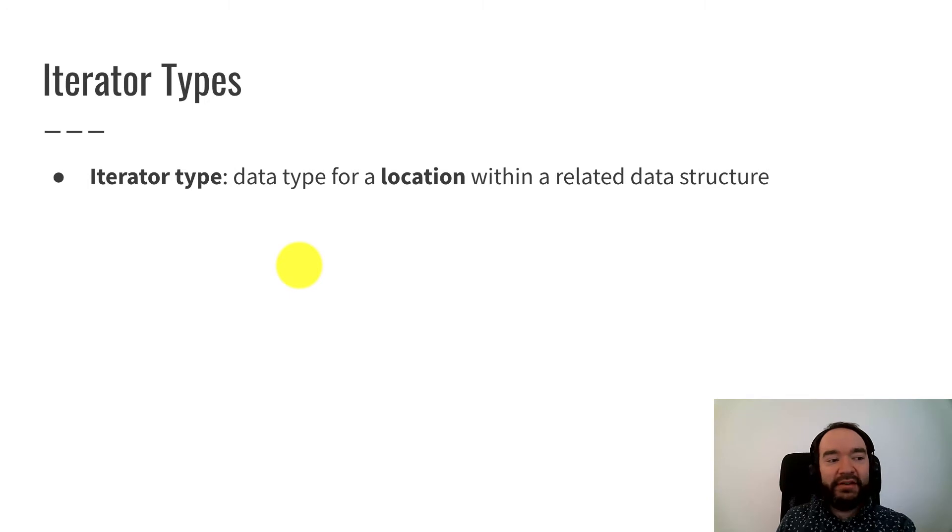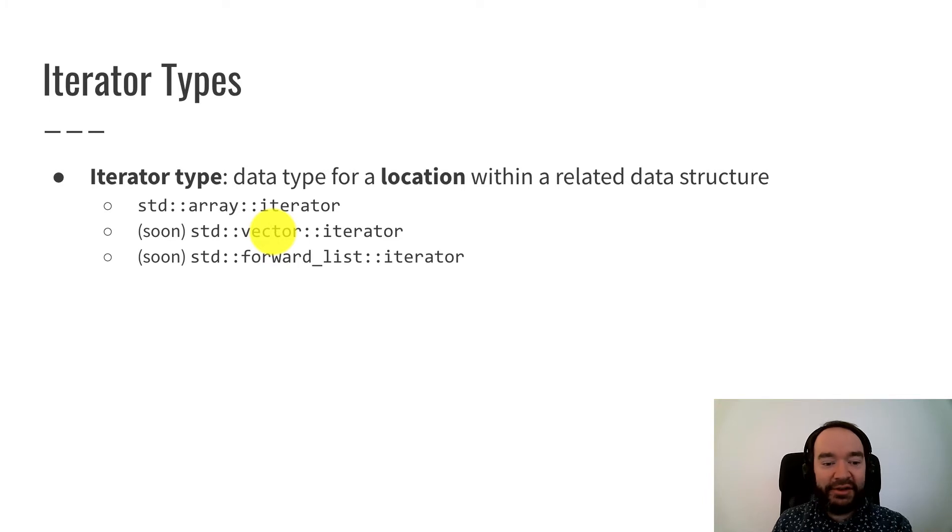So in C++, iterators are data types. An iterator type is a data type and it represents a location within a related data structure. So for instance, there's a data structure std::array. That's an array. And then std::array::iterator is a different data type but a related data type that represents a location in an array. So an array iterator is a location in an array. Soon we're going to describe the vector data structure. And there's a vector iterator. A vector iterator is a location within a vector. And that pattern goes for other data structures. Forward list iterator is a location in a forward list. These are distinct data types.